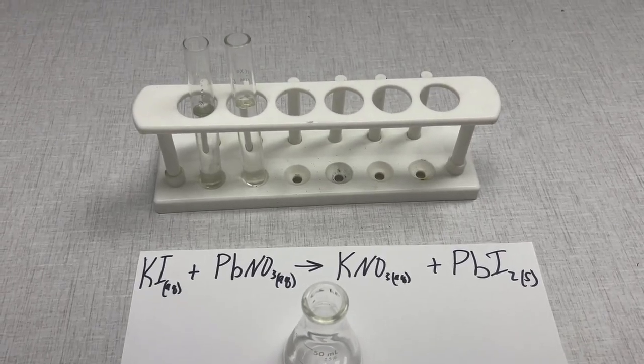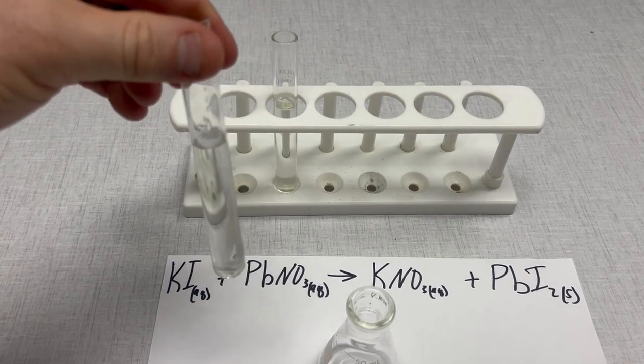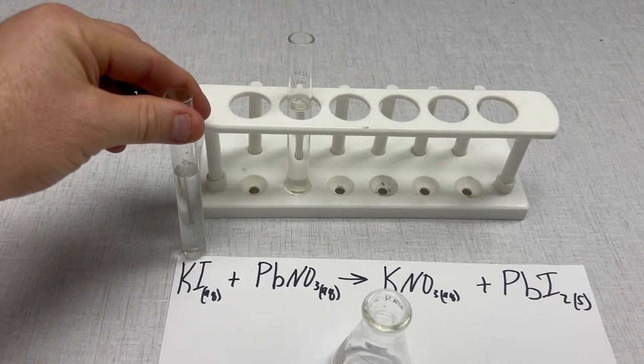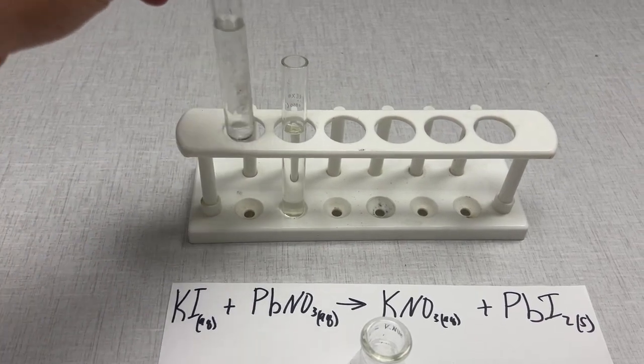In this demonstration we have two different chemicals. First, this is a clear liquid, this is potassium iodide or KI. See how it says AQ here, so we know that this has been dissolved into solution.